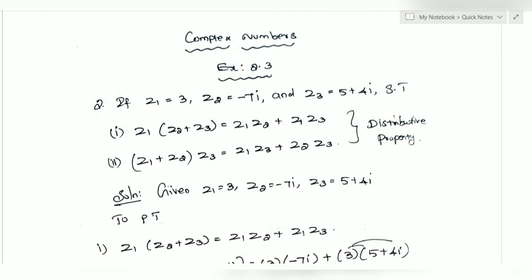Given: Z1 is equal to 3, Z2 is equal to minus 7i, and Z3 is equal to 5 plus 4i. Show that Z1 times (Z2 plus Z3) equals Z1·Z2 plus Z1·Z3, and (Z1 plus Z2) times Z3 equals Z1·Z3 plus Z2·Z3 — the distributive property.